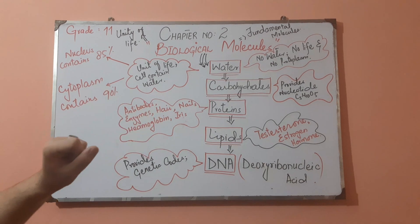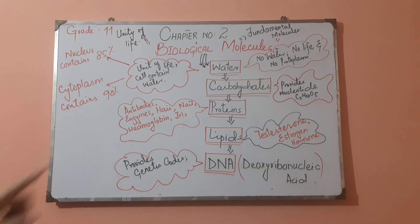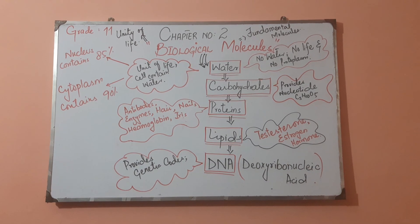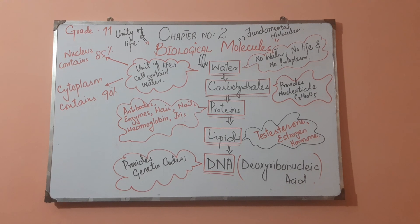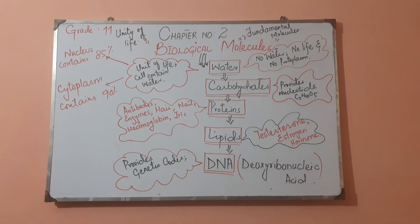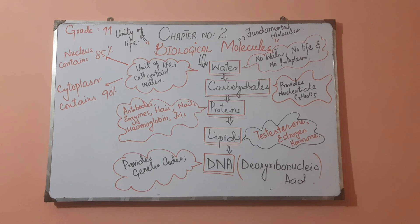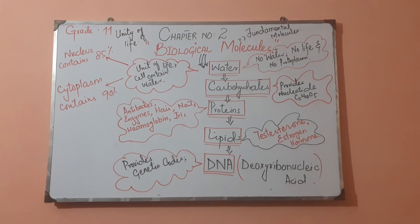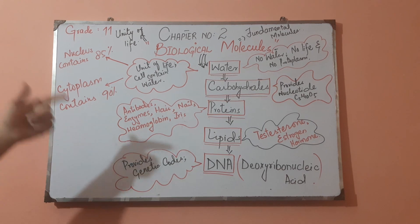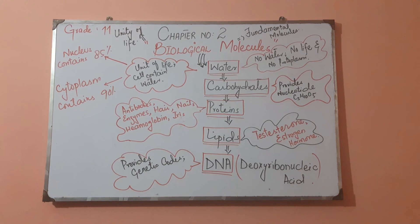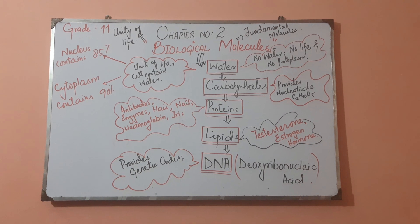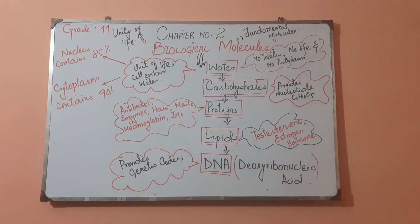Now, coming towards proteins — these proteins are very important and have a primary importance in our life. In our body, different antibodies are made up of proteins, different enzymes are made up of proteins. Similarly, hemoglobin, which is responsible for carrying oxygen, is also made up of proteins. The iris present in the human eye is also made up of proteins. Nails, hair, and feathers of birds — these all are made up of proteins.